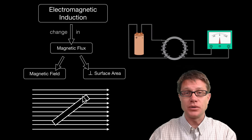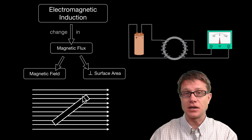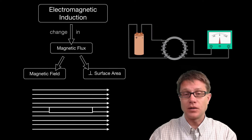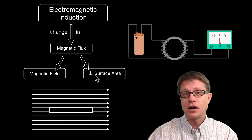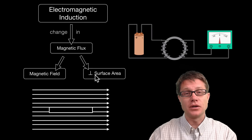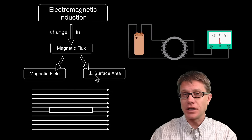But did it change between those two rotations? Yes. And so was there electromagnetic induction? Yes, and so there would be current as well. If we turn it so that the magnetic flux is zero — because none of these magnetic field lines are perpendicular to the surface — it still changed between those two points. And so we are going to have induction and we are going to have current. So that seems a little non-intuitive, but it has real world applications.